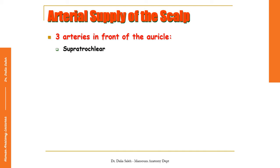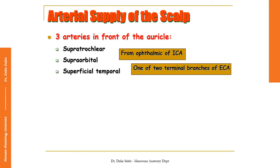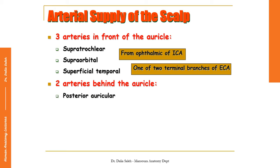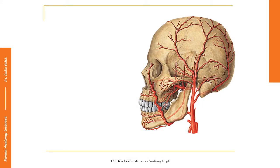The supratrochlear artery and the supraorbital artery — these two arteries are branches from the ophthalmic artery, which is a branch of the internal carotid artery. Also we have the superficial temporal artery, which is one of the two terminal branches of the external carotid artery. Behind the auricle we have two arteries: the posterior auricular artery and the occipital artery, both of which are branches from the external carotid artery.